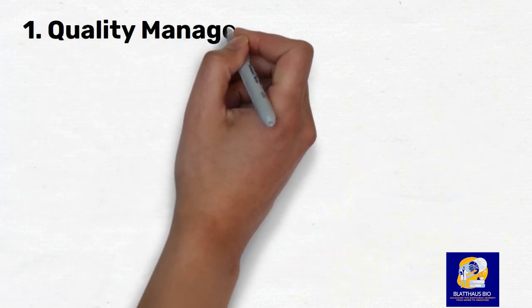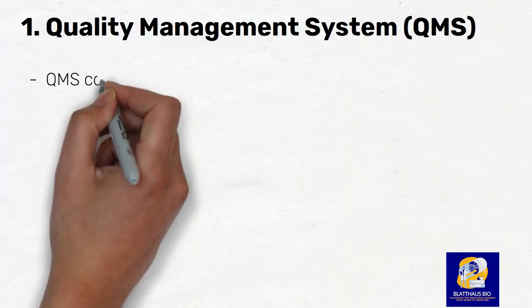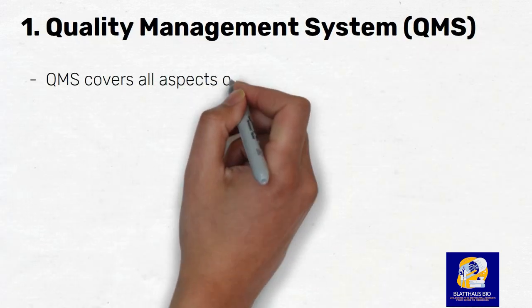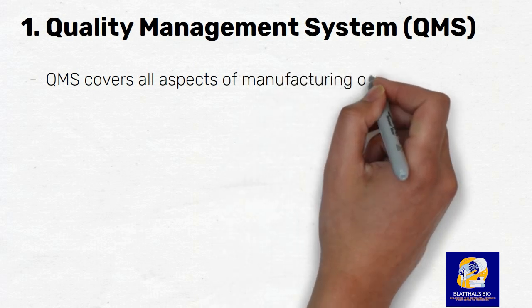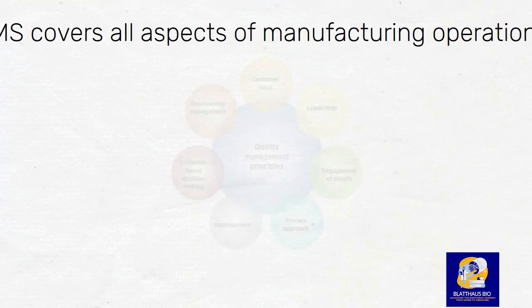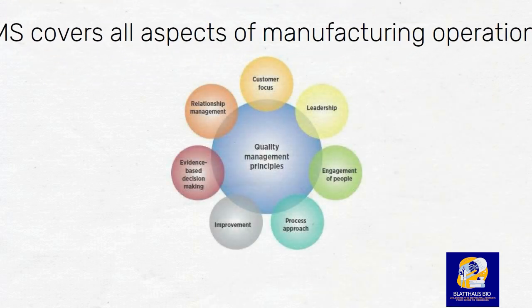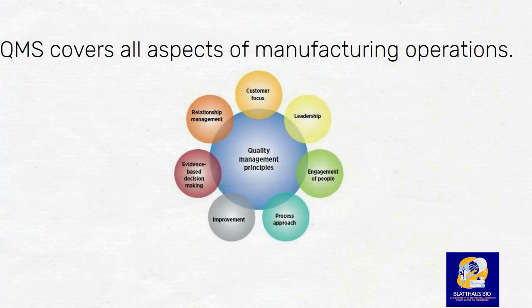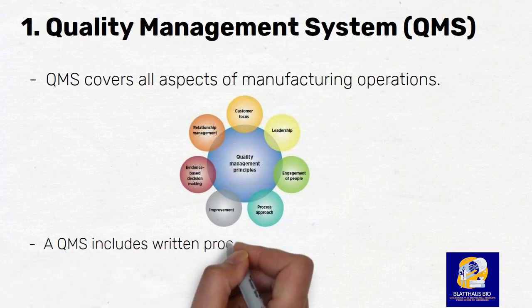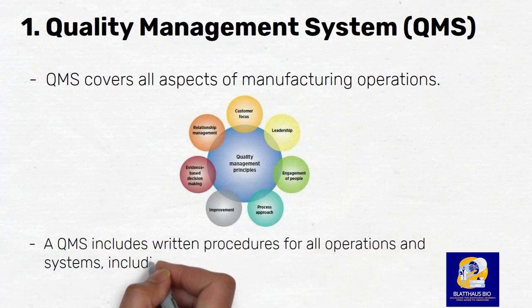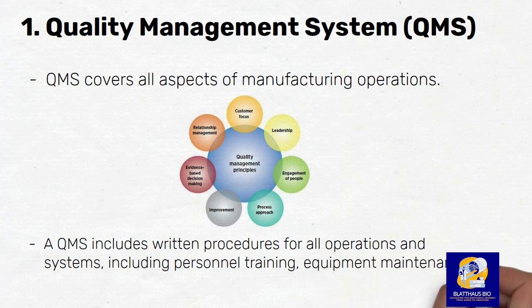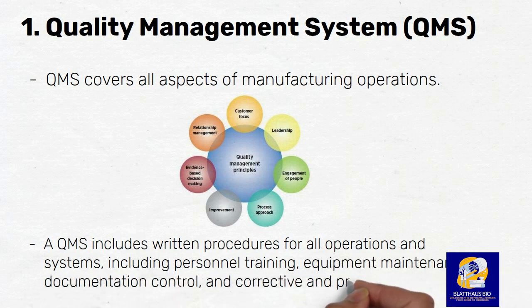Number 1: Quality Management System. The first principle of GMP is the establishment of a Quality Management System (QMS) that covers all aspects of manufacturing operations. A QMS includes written procedures for all operations and systems, including personnel training, equipment maintenance, documentation control, and corrective and preventive actions. Examples of a QMS include ISO 9001 and FDA's Quality System Regulation (QSR).